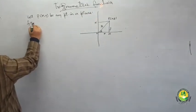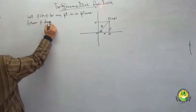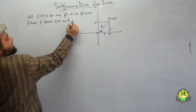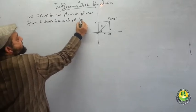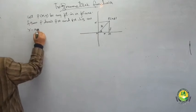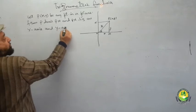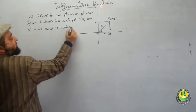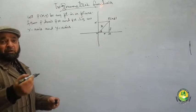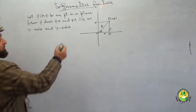From point P, draw PM and PN as perpendiculars on the X-axis and Y-axis respectively. PM is perpendicular on the X-axis and PN is perpendicular on the Y-axis. Then OM is equal to x and PM is equal to y.